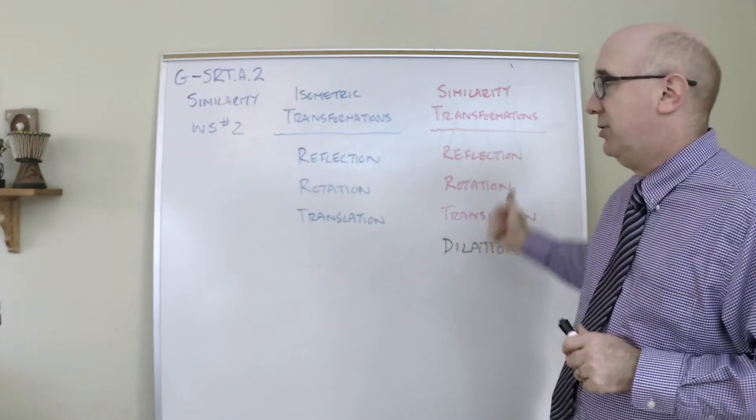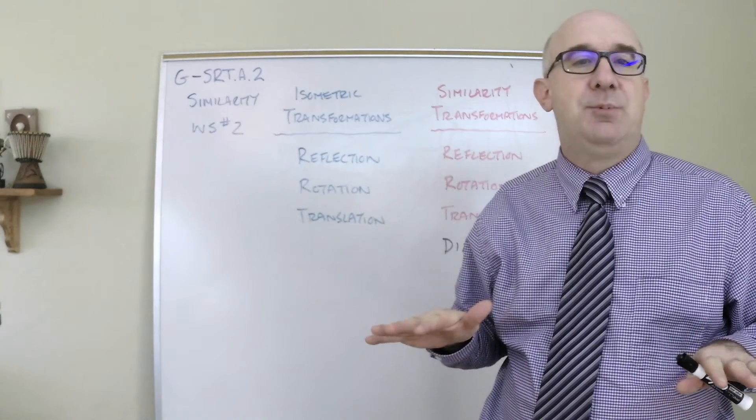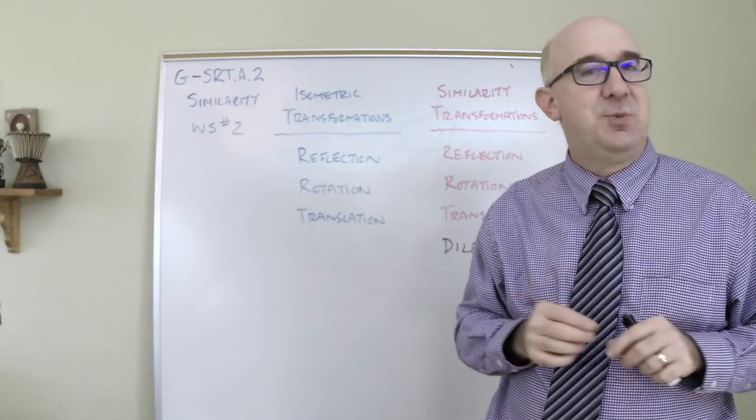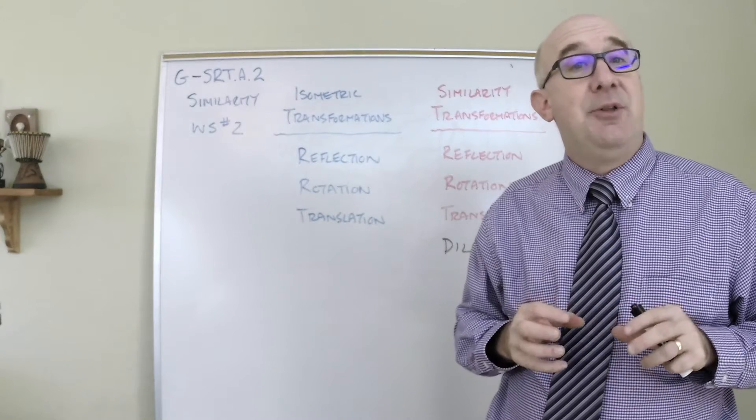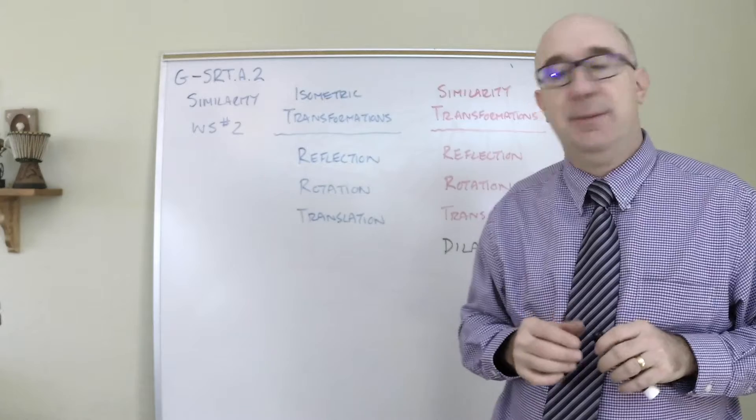Similarity transformations include these items and then it is about altering one shape to map it onto the other just as we did with congruence. But now the shapes can be proportional and still establish similarity.